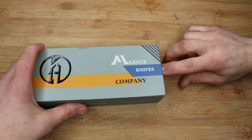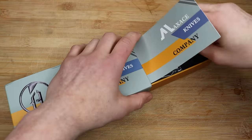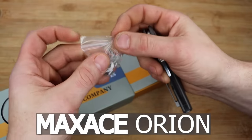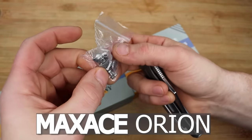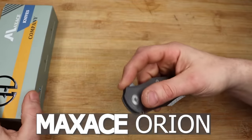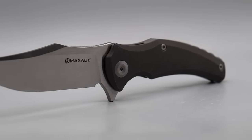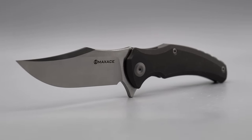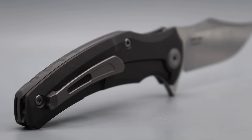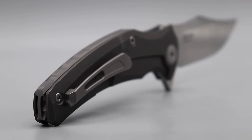We have five brand new knives to check out for the first time. This is the Orion from MaxAce. It comes with extra hardware, and here she is. The MaxAce Orion has this beautiful satin finished MagnaCut blade.